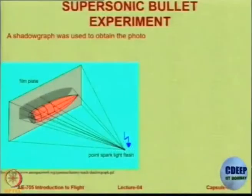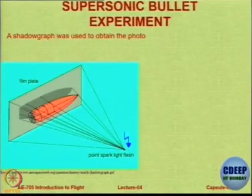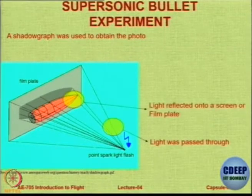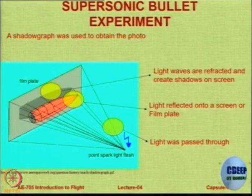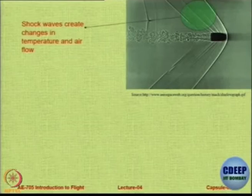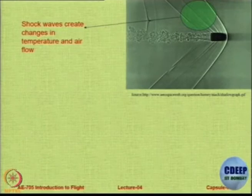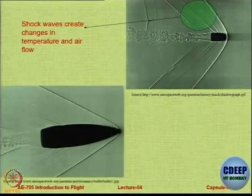This is a technique used to obtain the photo called a shadowgraph, which is different from Schlieren. Light was passed through this, there was a reflection on the film plate, and those film plates created shadows — and those shadows are what you are seeing. For the moment, these lines are basically called shock waves. What they are and how they come we will cover in the next few lectures, but basically the effect of shock waves is to create changes in temperature and in the air flow.